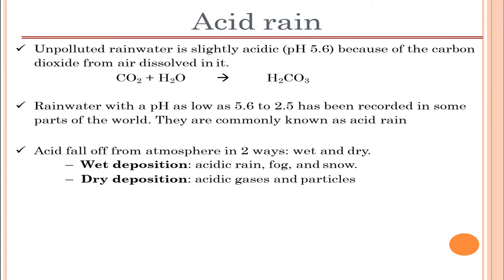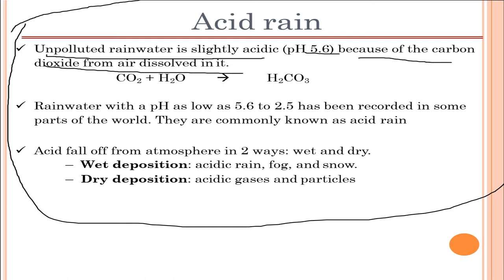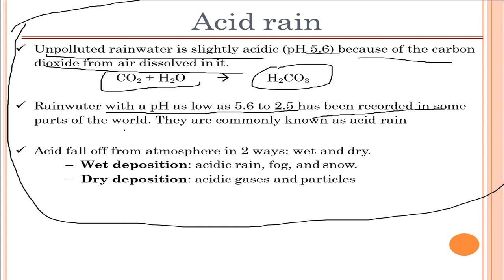Moving on to acid rain — a very important component of air pollution. Polluted rainwater is slightly acidic, around pH 5.6, because carbon dioxide from air dissolves in it: CO₂ mixed with water leads to carbonic acid. Rainwater with pH as low as 5.6 to 2.5 has been recorded in some parts of the world, and this is commonly known as acid rain. Acid rain falls from the atmosphere in two ways: wet deposition (acid rain, fog, or snow) and dry deposition (acidic gases or particles).